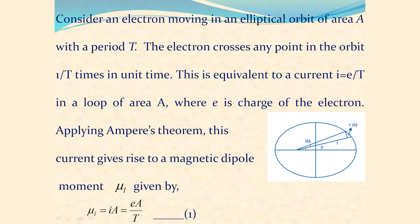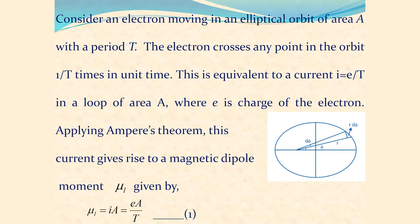The electron crosses any point in the orbit 1/T times in unit time, which is the frequency. Therefore, this is equivalent to a current I given by charge into frequency: E into 1/T. Applying Ampere's theorem, the magnetic moment associated with the electron orbiting in a circular orbit of area A with time period T is given by mu_L = I × A, where I = E/T. So mu_L is given by charge E times area of the elliptical orbit divided by T.